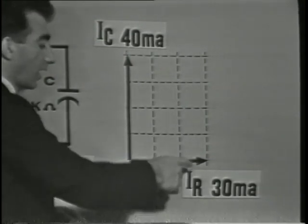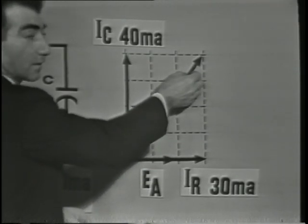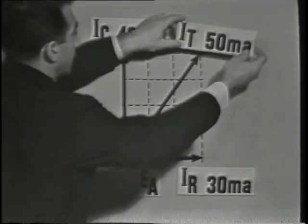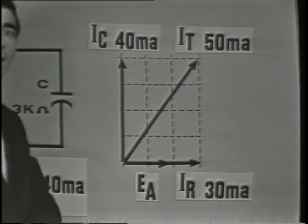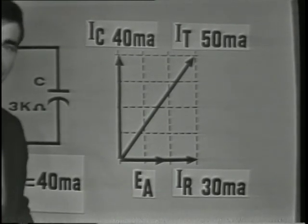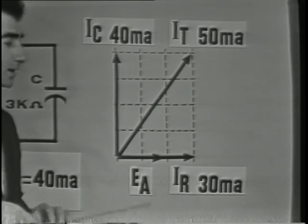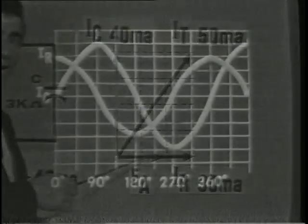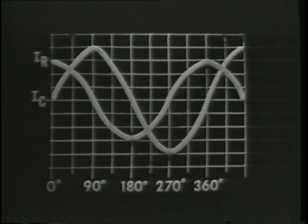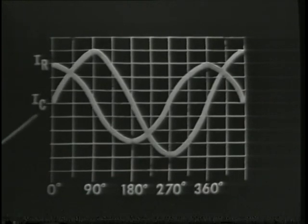We can draw our parallelogram and find the approximate total current by simply measuring the length of the resultant vector. If we measured the resultant vector, it would be 50 milliamps — IT is 50 milliamps. The reason these two currents cannot be added together is because they don't occur at the same time. We know that IC and IR are 90 degrees apart. If we plot the waveforms of these two currents, we will see that the resultant current will be greater than either of them, but less than the arithmetical sum.